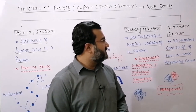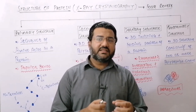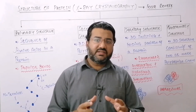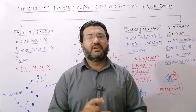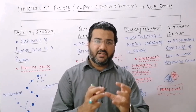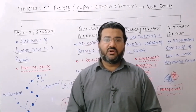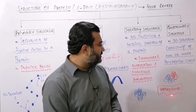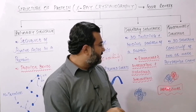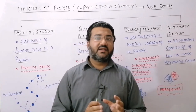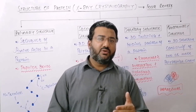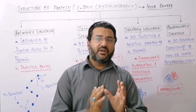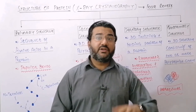The last level is the quaternary structure. Quaternary structure is basically the special arrangement of two or more than two polypeptide chains of a protein. Quaternary structure is seen when the protein consists of two or more polypeptide chains and their special arrangement with respect to each other. If there are two polypeptide chains, that quaternary structure is called a dimer, and if those two polypeptide chains are different from each other, then it is a hetero dimer — just like in the case of insulin, which has an alpha chain and a beta chain. So the quaternary structure of insulin is an example of the hetero dimer.